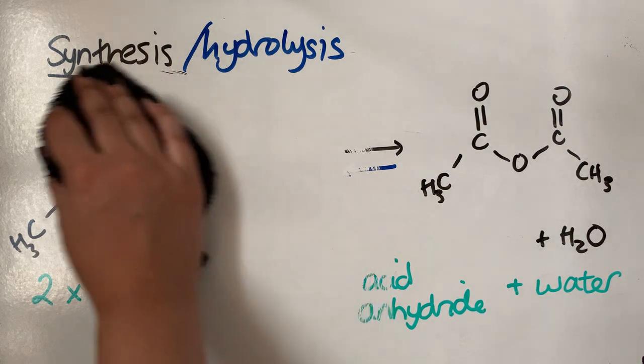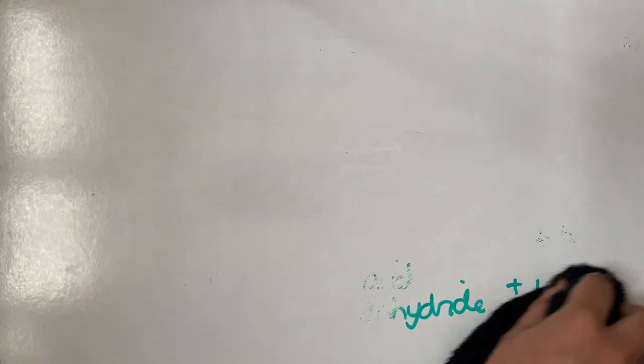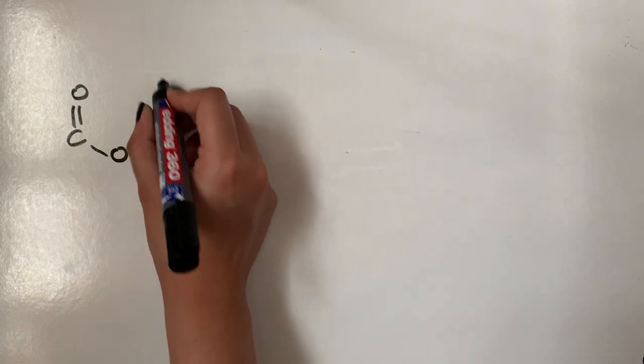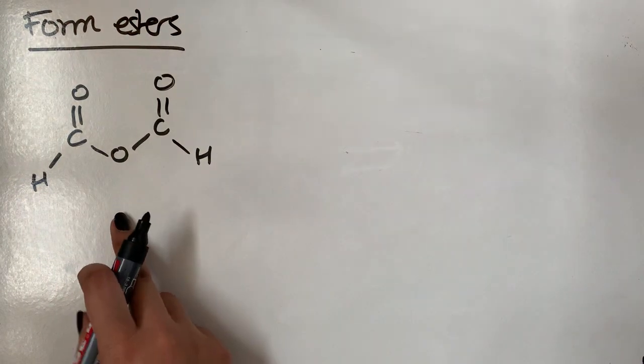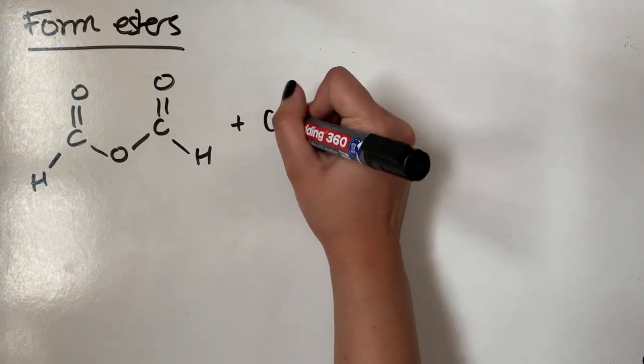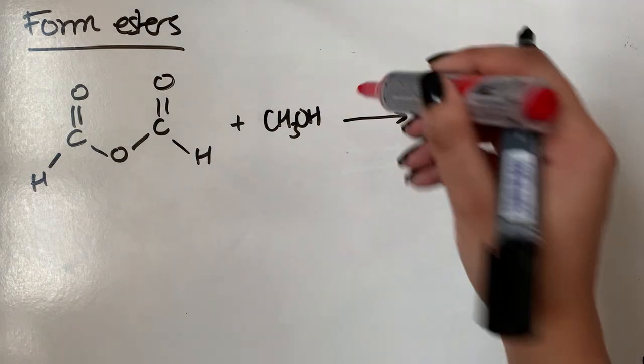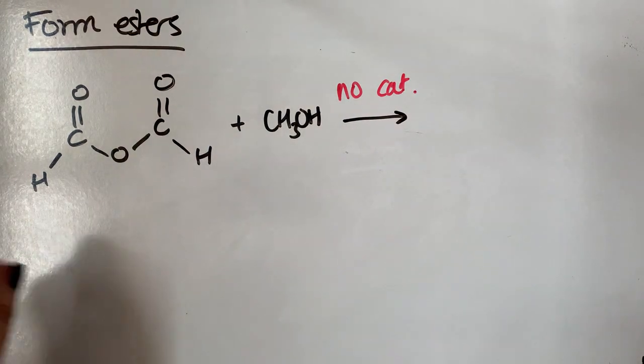Let's think about why we might want to make an acid anhydride. Before, when we looked at acyl chlorides, we saw they were more reactive than the parent carboxylic acid — when reacting with alcohols, you didn't require a catalyst. The same thing applies for acid anhydrides. Acid anhydrides are more reactive than the parent carboxylic acid, and therefore when you react them with an alcohol, you don't require a catalyst. So we use them to form esters: acid anhydride plus an alcohol, no catalyst required, forms the ester.